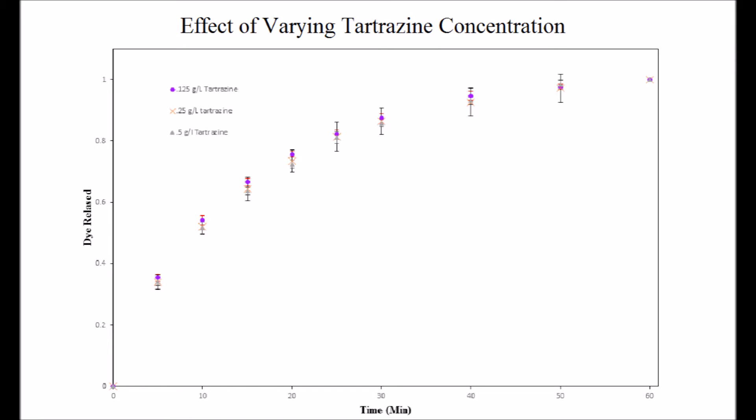This graph shows data taken from another group. It shows that dye fraction as a function of time while comparing different concentrations of tartrazine. The concentrations tested were 0.125 grams per liter, 0.25 grams per liter, and 0.5 grams per liter of tartrazine. As you can tell by the graph, the concentration of tartrazine in this solution has little to no effect on the fraction of dye released.